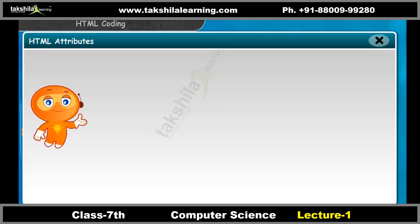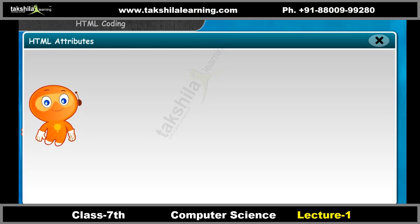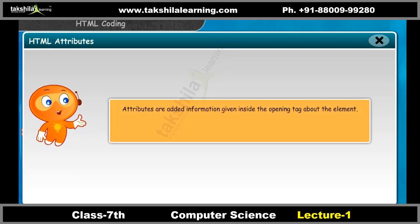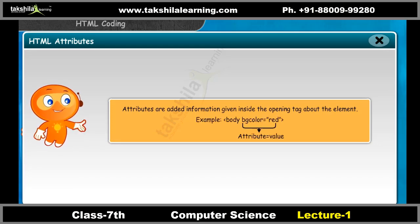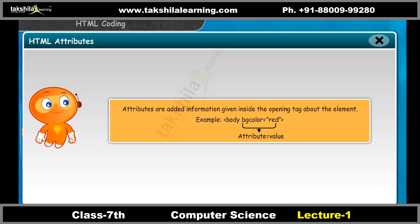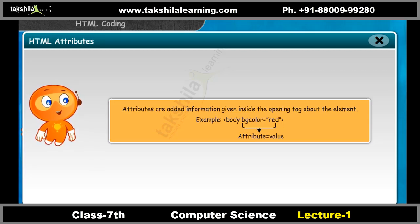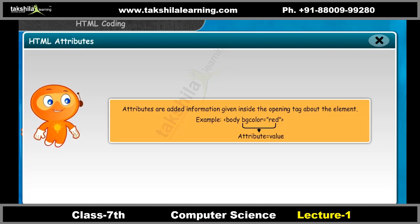HTML attributes: attributes are added information given inside the opening tag about the element. For example, if background color has to be added to an element, then the element will be written as: &lt;body bgcolor="red"&gt;.